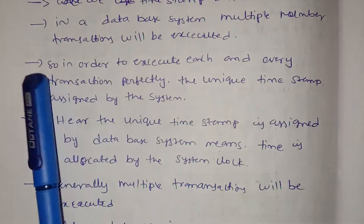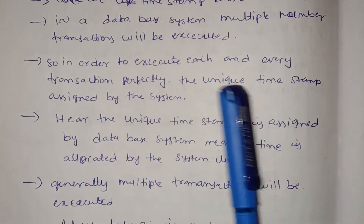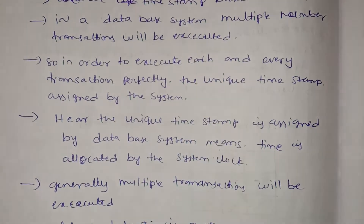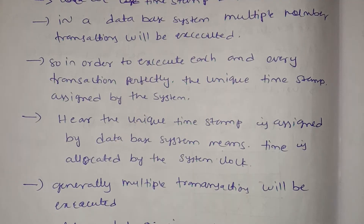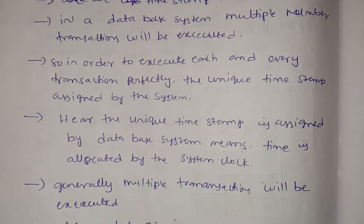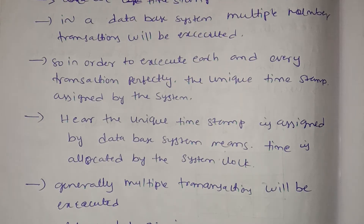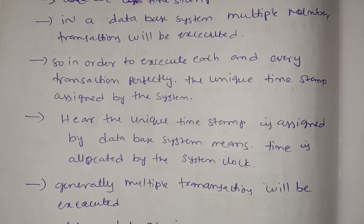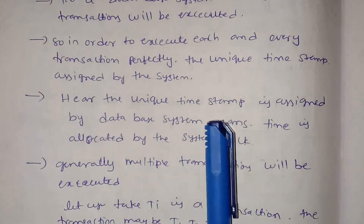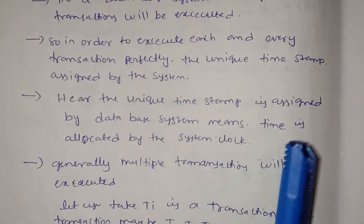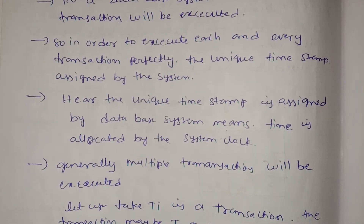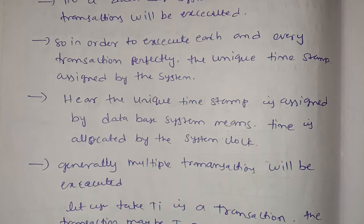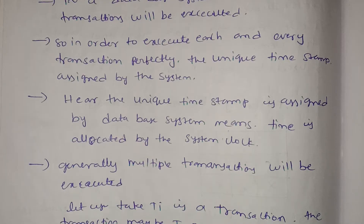The timestamp is assigned by the system. Every transaction is assigned a unique timestamp by the database system. The time is allocated using the system clock, ensuring uniqueness of each timestamp assigned to the database.